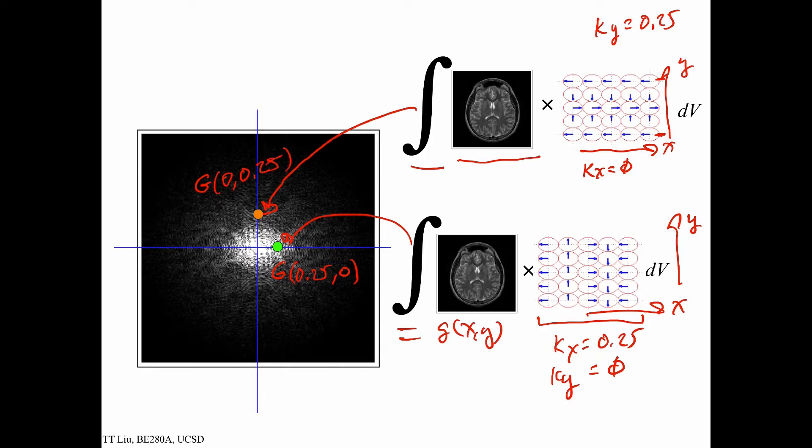We repeat this process for every location in k-space. That means we have to take our object, multiply it by a phasor pattern, and enter it into the correct place in k-space — repeating this many, many times.